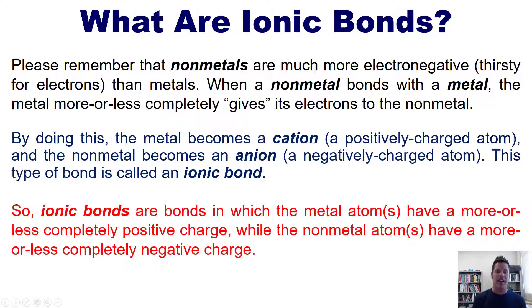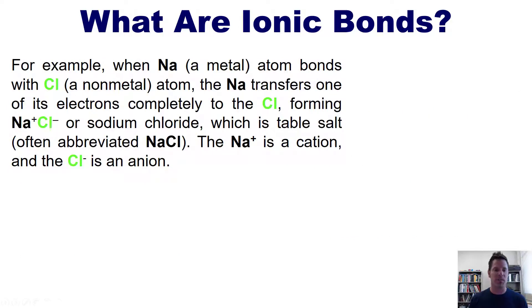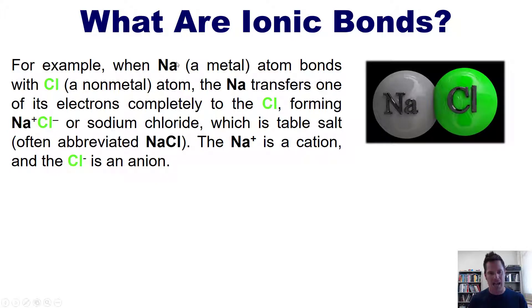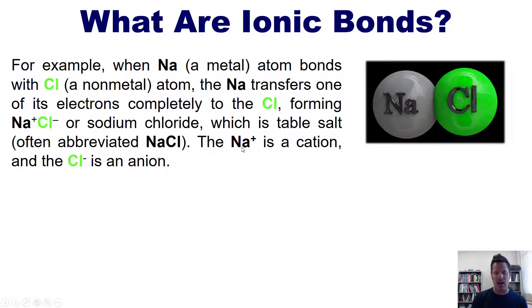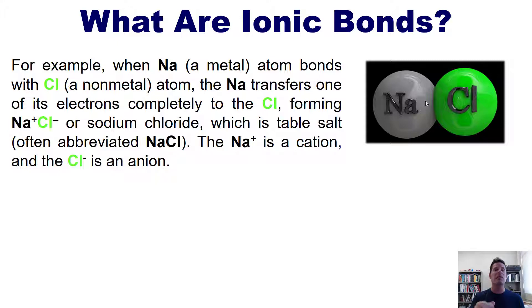Ionic bonds are bonds in which the metal atom or atoms have a more or less completely positive charge, while the non-metal atom or atoms have a more or less completely negative charge. For example, when sodium, which is a metal, bonds with chlorine, which is a non-metal, the sodium transfers its outermost valence electron completely to the chlorine, forming Na⁺ and Cl⁻ — sodium chloride, table salt, abbreviated as NaCl. The Na⁺ is a cation and the chloride is an anion. The chlorine atom accepts the negatively charged valence electron from the sodium, gaining a negative charge, while the sodium, having lost its outermost electron, now has a positive one charge.